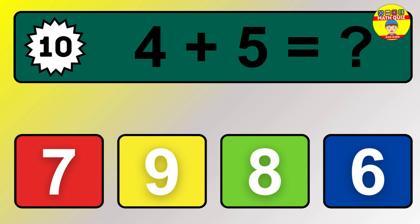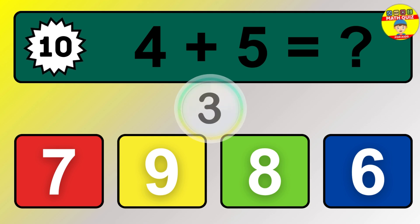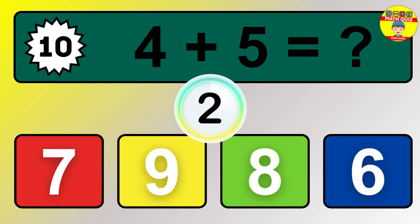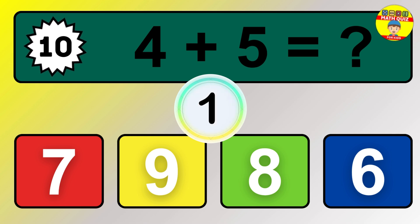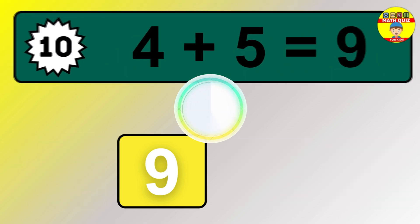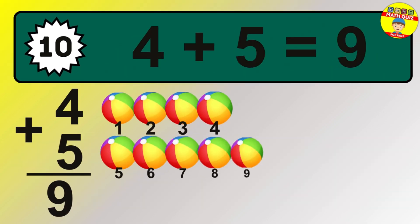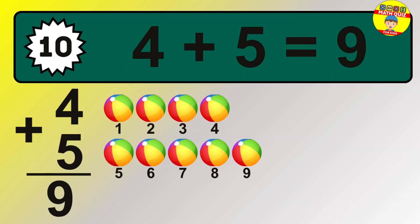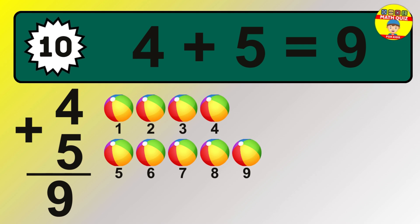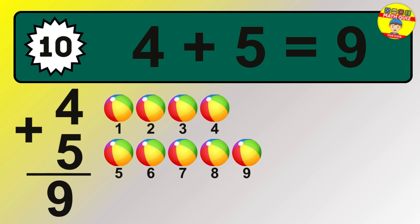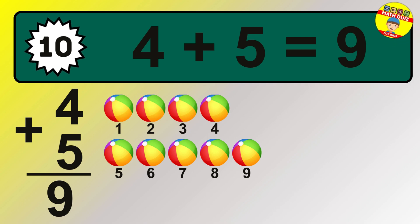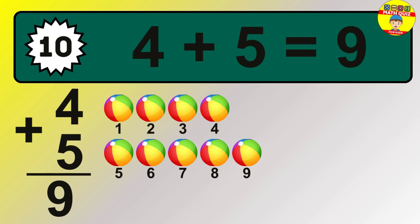Question 10. 4 plus 5 equals what? So the answer is 4 plus 5 is 9. Let's count it. 1, 2, 3, 4, 5, 6, 7, 8, 9.